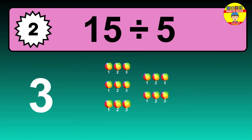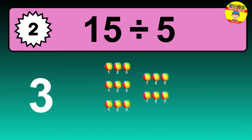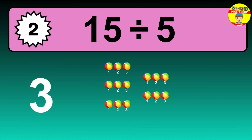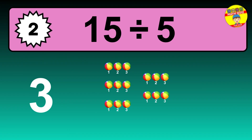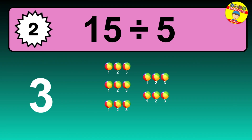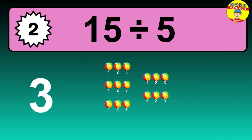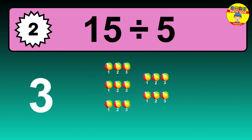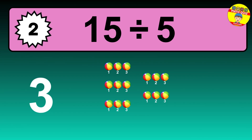Let's go to the solution. Divide the number 15 by 5. Each group contains 5 units, so dividing 15 by 5 results in 3 equal groups. Thus, the result is 15 divided by 5 equals 3.